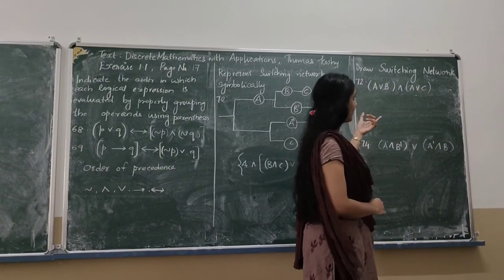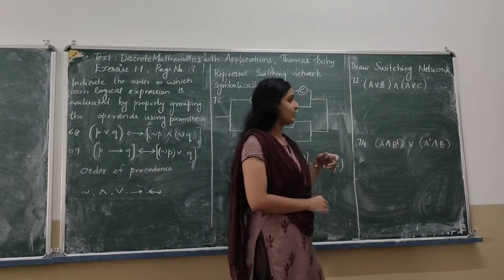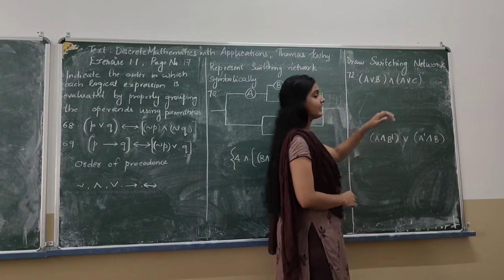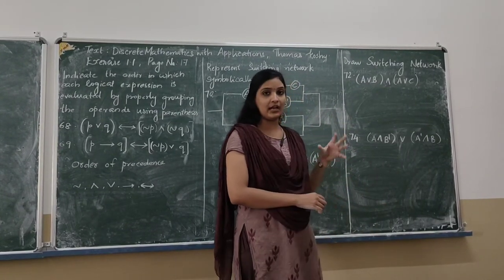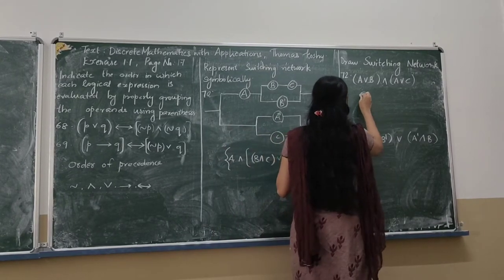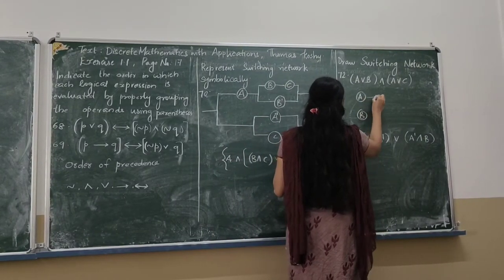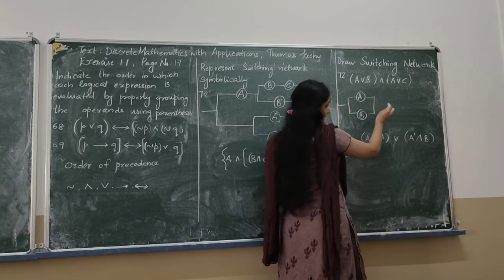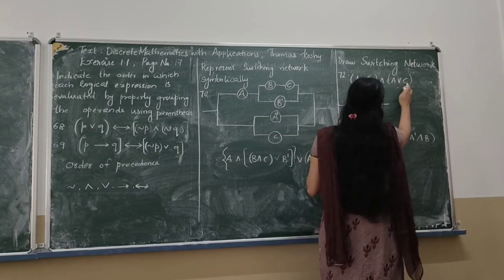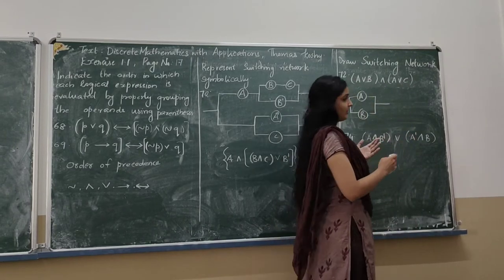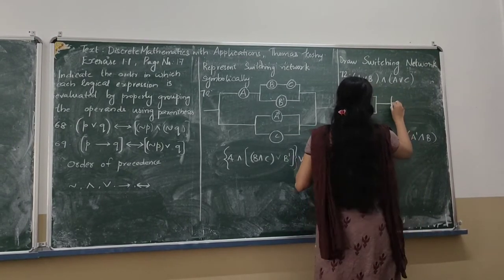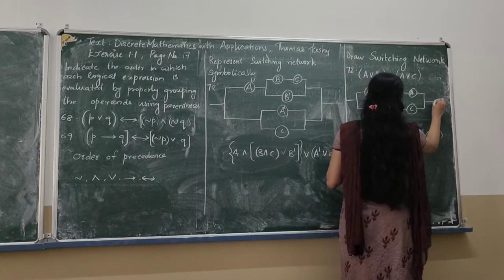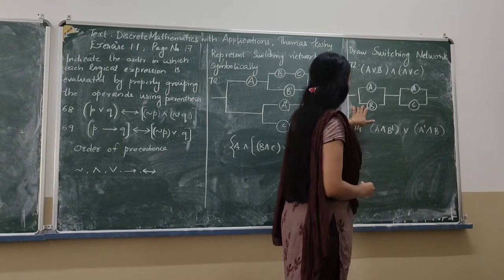The next question: given a symbolic representation, draw the switching network. The proposition is A or B and A or C. First, A or B means A and B are parallel. Then this network and the next network are on the same line since the and operator is used. And A or C means A and C are parallel to each other. So we draw them in parallel. This is the switching network for this proposition.